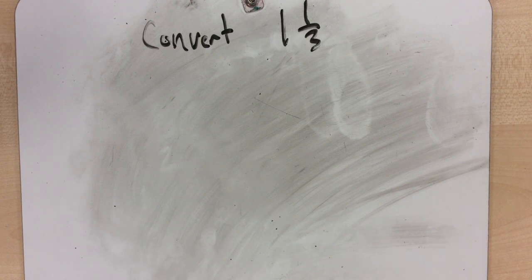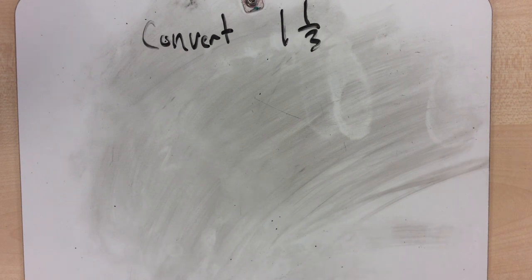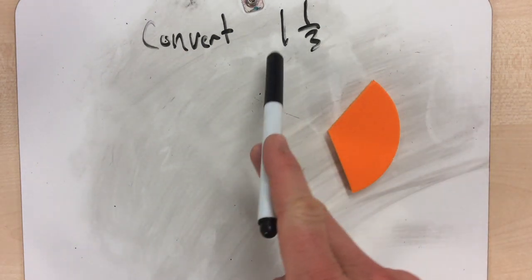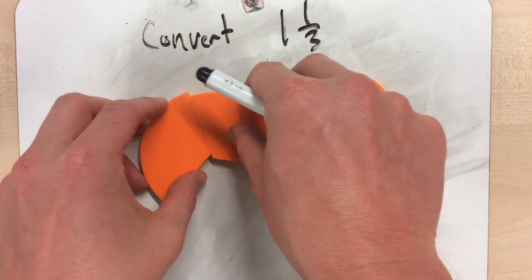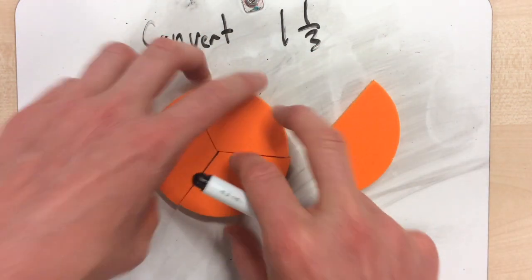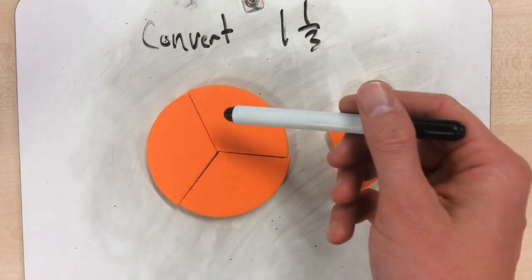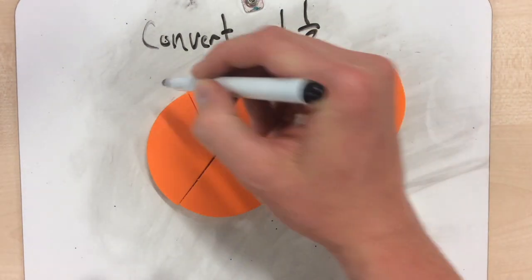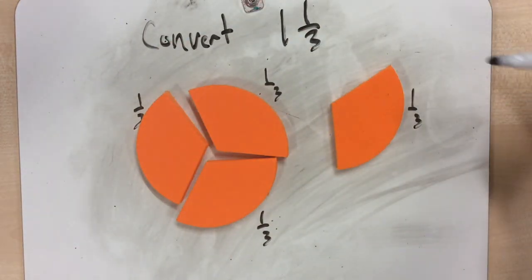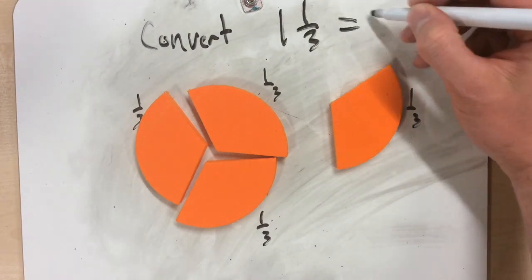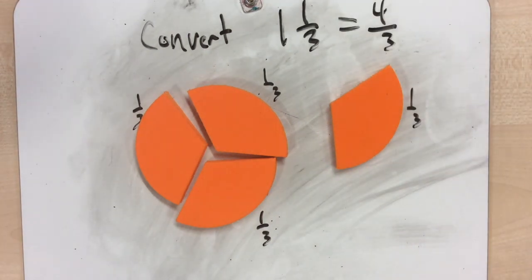My first conversion is to convert 1 and 1 third, which is a mixed fraction, into an improper fraction. I know I'm going to have at least 1 third. I need to figure out what 1 is the same as. A whole made of thirds is going to be 3 thirds, so I'll put my whole right here. Now if I count up my thirds, I've got 1 third, 1 third, 1 third, 1 third, and 1 third — so I have 1, 2, 3, 4. So 1 and 1 third is the same as 4 thirds.